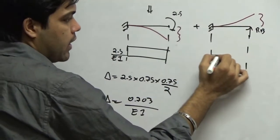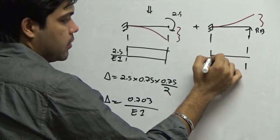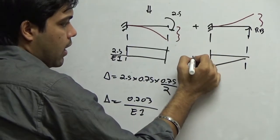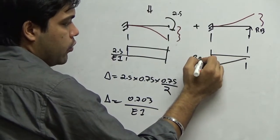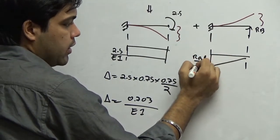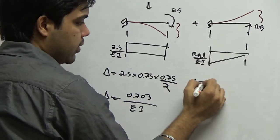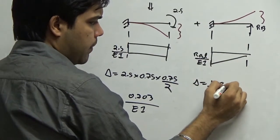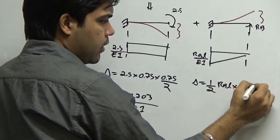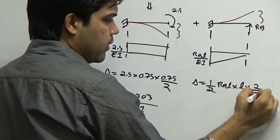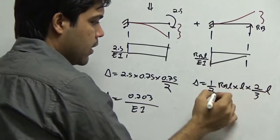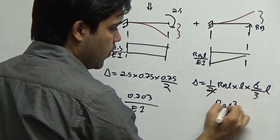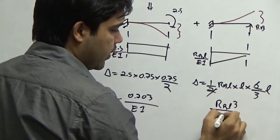That gives 0.703 upon EI as the deflection due to the moment. In case of the reaction, plotting it the opposite way, this will be Rb into L upon EI. The deflection is 1/2 into Rb into L into L into 2/3 of L. After cancellation, you get Rb L-cubed upon 3EI.